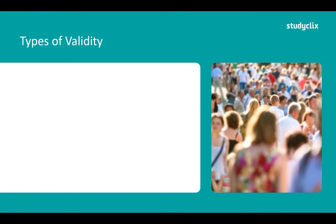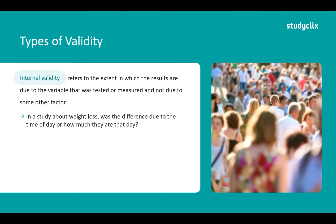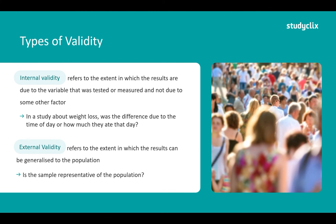Moving on to types of validity. Internal validity refers to the extent to which the results are due to the variable that was measured and not due to some other factor. In a study about weight loss, was the difference due to the time of day or how much they had already eaten? We also have external validity, which refers to the extent to which the results can be generalized to the population — is the sample representative of the population? So internal validity asks whether our variables explain the difference in results, while external validity refers to generalizing results to the broader population.